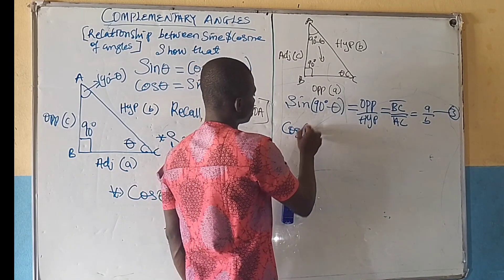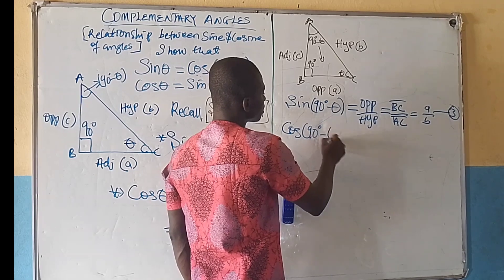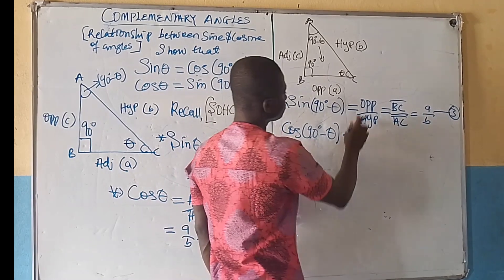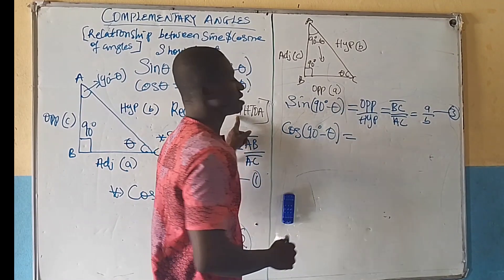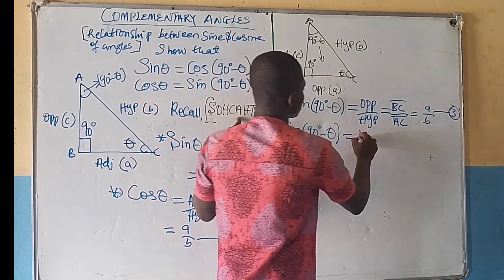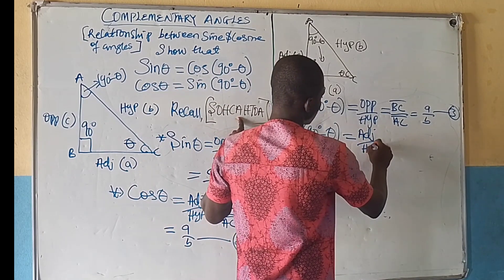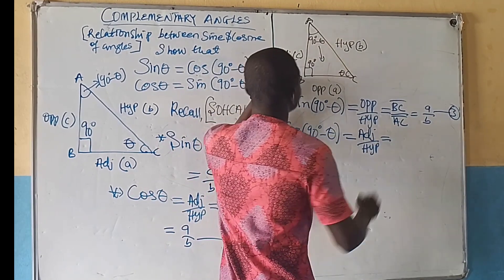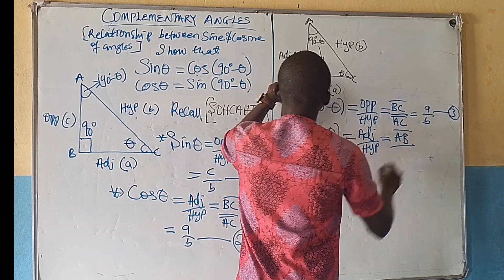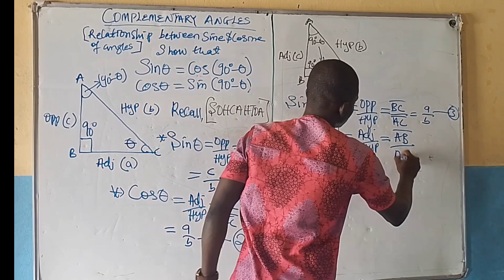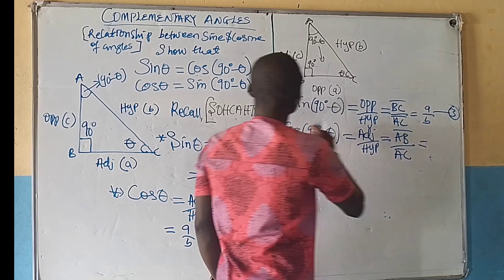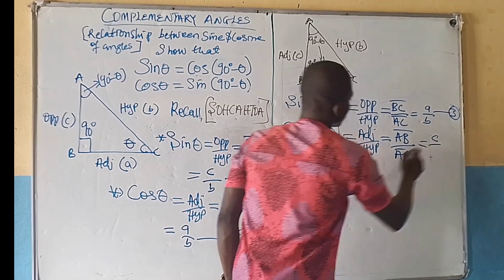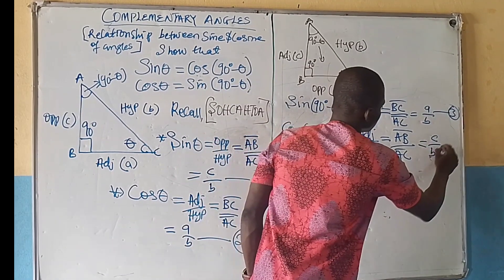Also, cos(90° − θ) equals adjacent over hypotenuse, and our adjacent is now AB over AC, which in lowercase letters is c over b. Let's call this Equation 4.